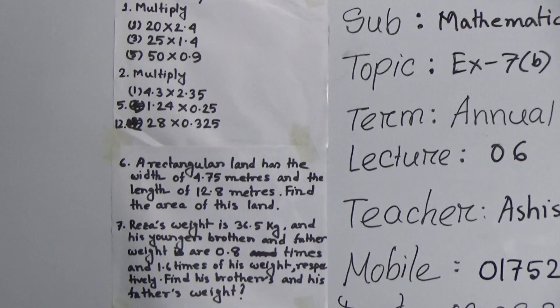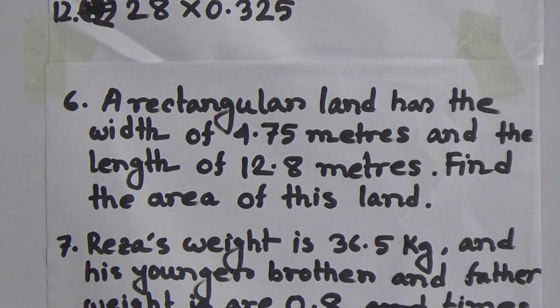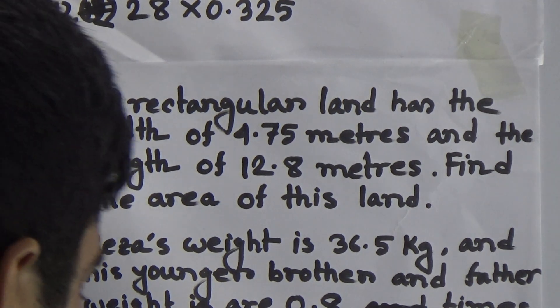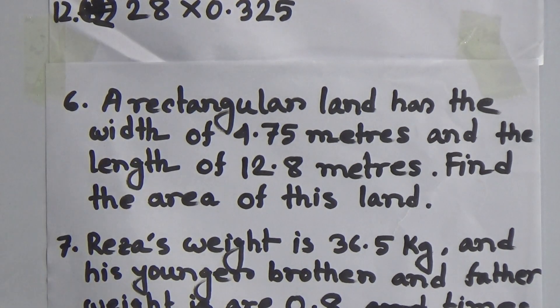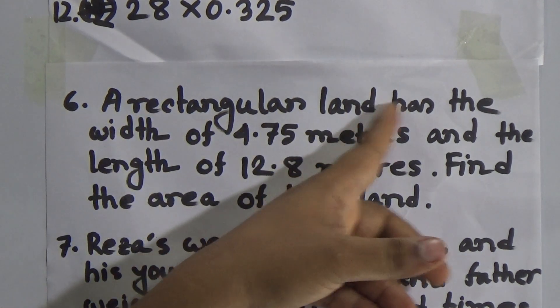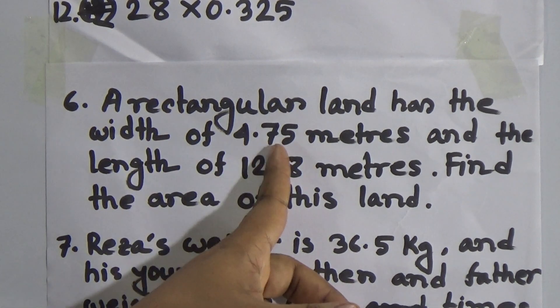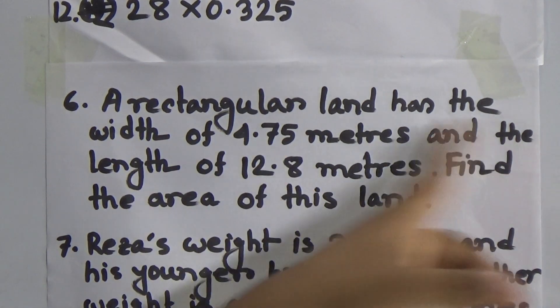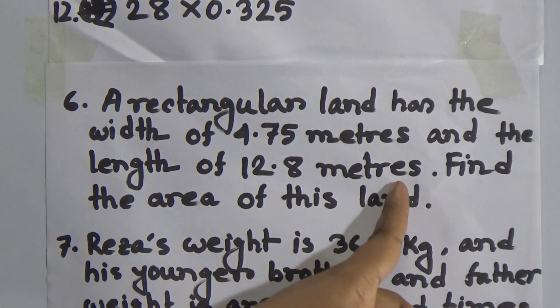Next, we shall solve word problem number 6 and word problem number 7. Both word problems are easy and based on these two problems, a lot of CBQ is available on your board exam. These two CBQs are very, very important for your annual exam. So now, first of all, we solve question number 6. A rectangular land has a width of 4.75 meters and a length of 12.8 meters.